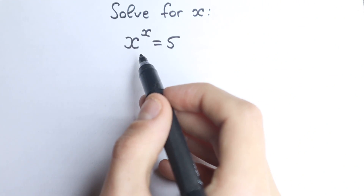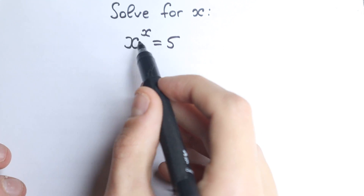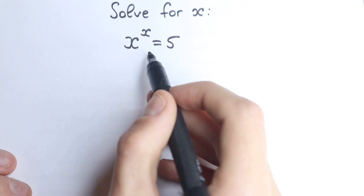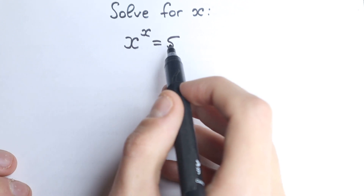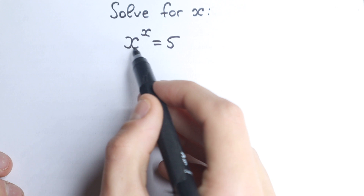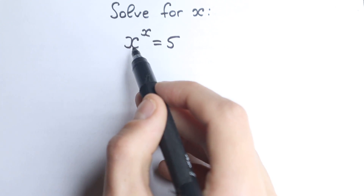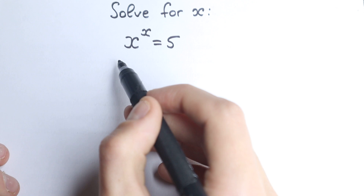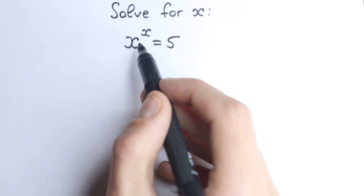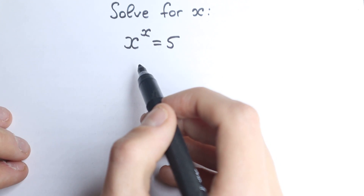On the first sight this looks like a very easy equation — we have x's on the left hand side grouped together, and a constant on the right hand side, so we can easily find our x. But here we have x in the base and x in our exponent, so it's a little bit difficult to solve in one or two lines, and it's really hard to figure out how we can solve this.